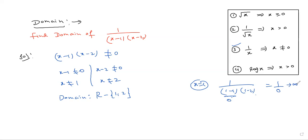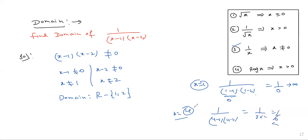Infinity is an unknown value. Even for x equal to 2, the denominator is 0, so the answer is infinity. Infinity is not a valid domain value. But for example, if x equals 4: 4 minus 1 times 4 minus 2 gives 1 over 3 times 2, which equals 1 by 6 — a real number. For that input you get a perfect output.